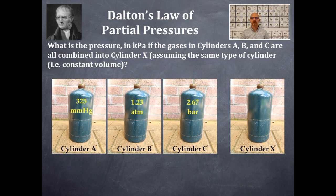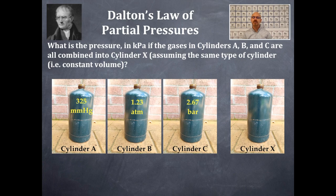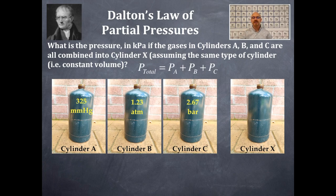Let's try another example of Dalton's Law. What is the pressure in kilopascals if the gases in cylinders A, B, and C are all combined into cylinder X, assuming the same type of cylinder — i.e., a constant volume? Cylinder A has 325 millimeters of mercury, cylinder B has 1.23 atmospheres, and cylinder C has 2.67 bar. The total pressure equals the pressure of gas A, plus gas B, plus gas C.